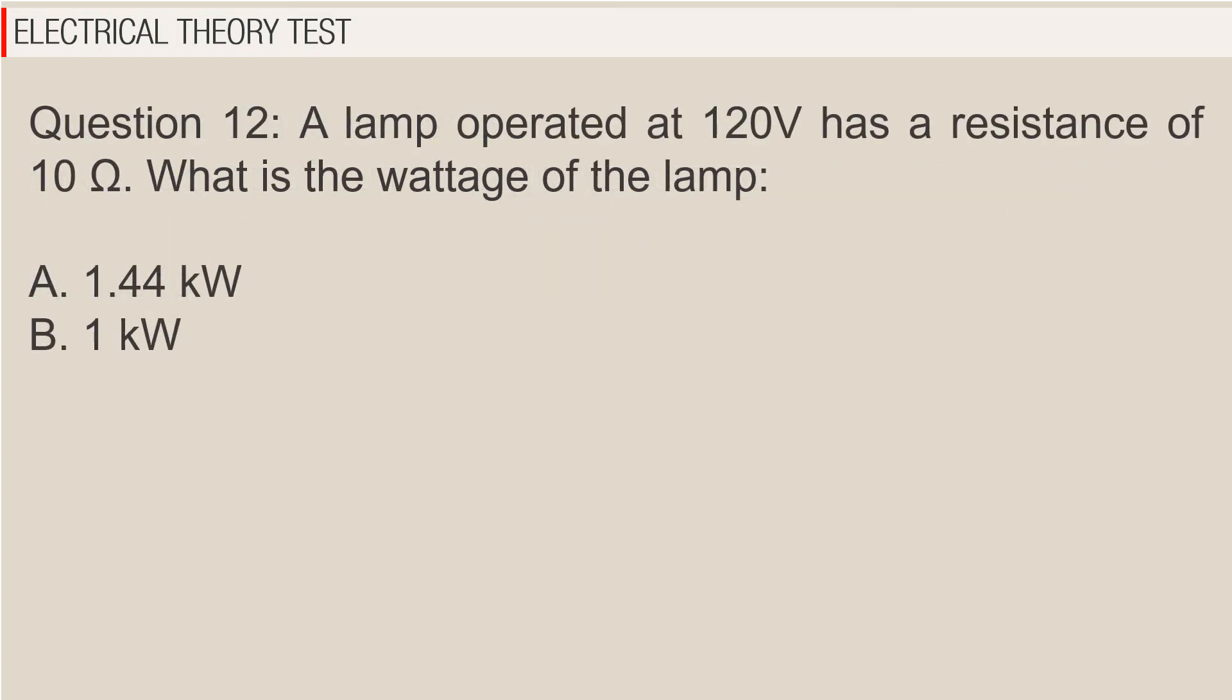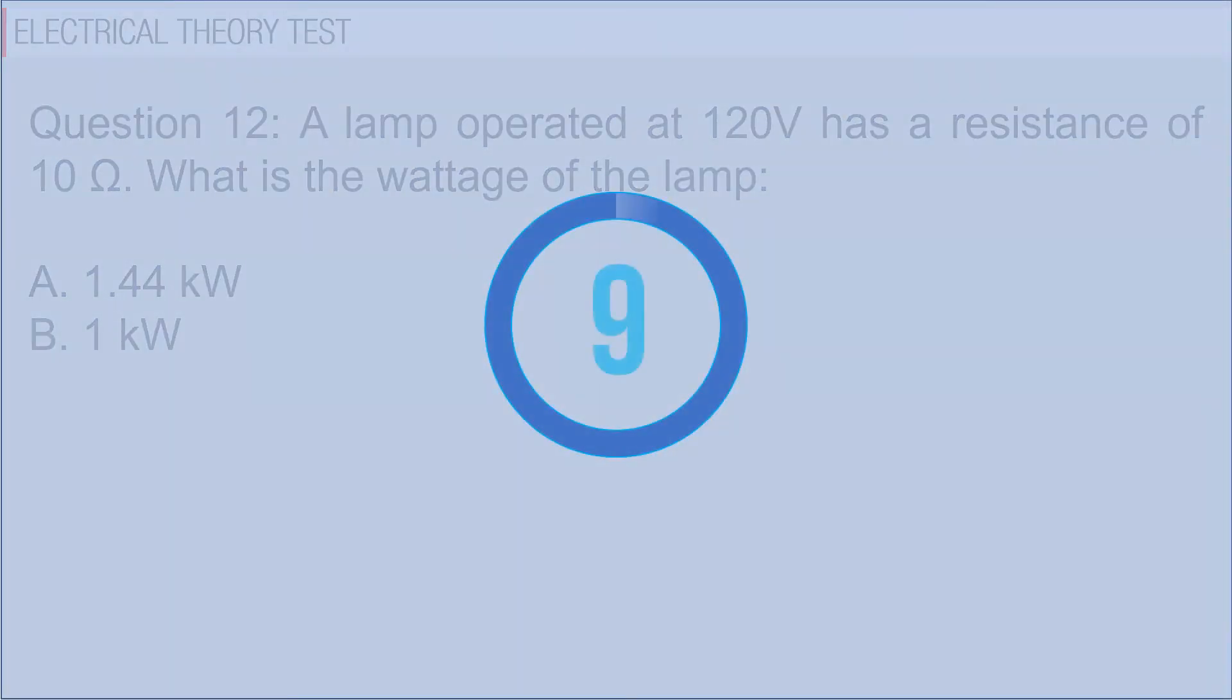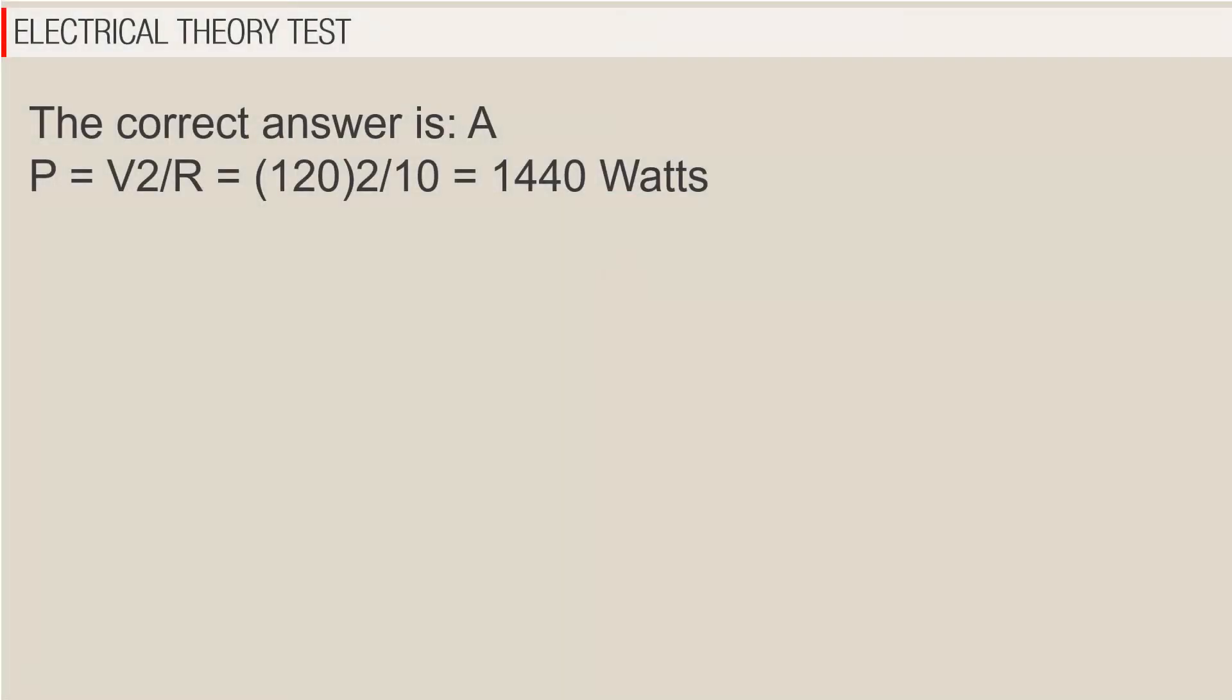Question 12: A lamp operated at 120 volts has a resistance of 10 ohms. What is the wattage of the lamp? A. 1.44 kilowatts, B. 1 kilowatt. The correct answer is A. P equals V squared over R equals 120 squared over 10 equals 1440 watts.